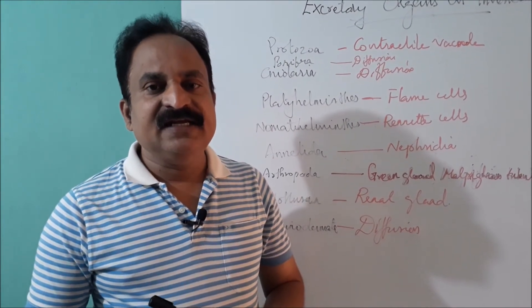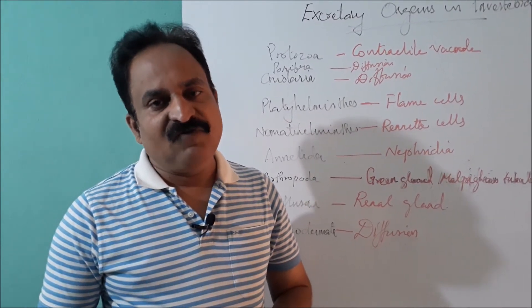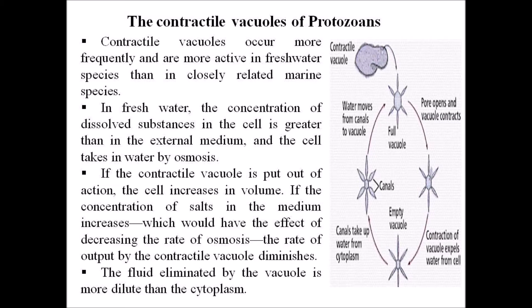The contractile vacuoles of protozoans occur more frequently and are more active in freshwater species than in closely related marine species. In freshwater, the concentration of dissolved substances in the cell is greater than in the external medium, and the cell takes in water by osmosis. If the contractile vacuole is put out of action, the cell increases in volume. If the concentration of salts in the medium increases, decreasing the rate of osmosis, the rate of output by the contractile vacuole diminishes.